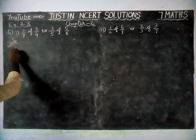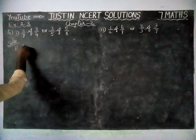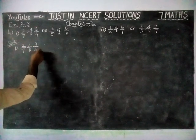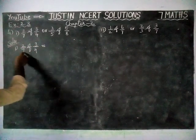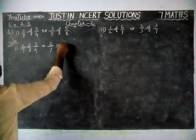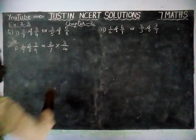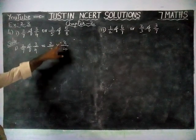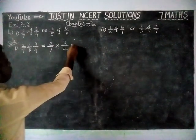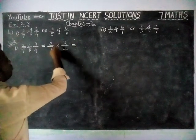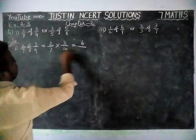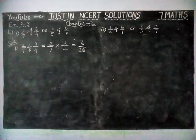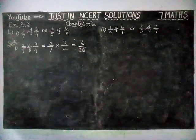Solution. For the first question, 2/7 of 3/4 is equal to 2/7 into 3/4. If it is possible to simplify by a common divisor we can simplify, but here there is no possibility. So the answer will come: 2 × 3 = 6, divided by 7 × 4 = 28. This is a proper fraction, we cannot simplify further.